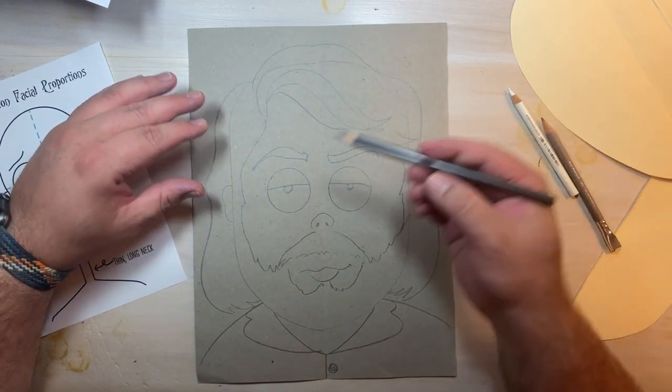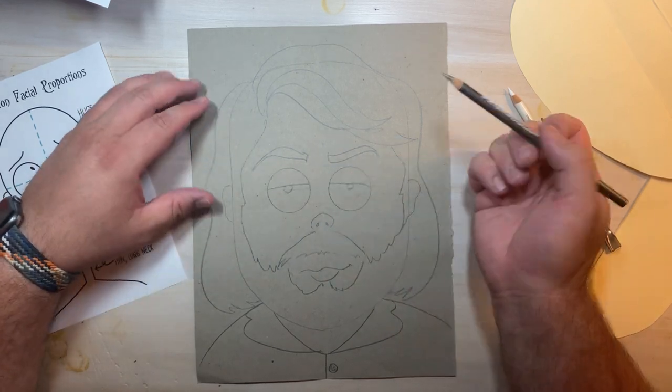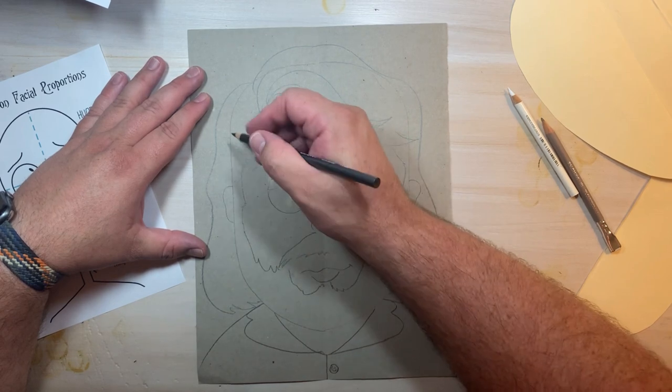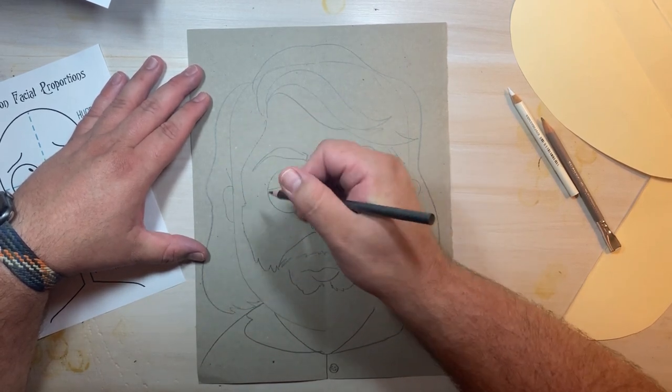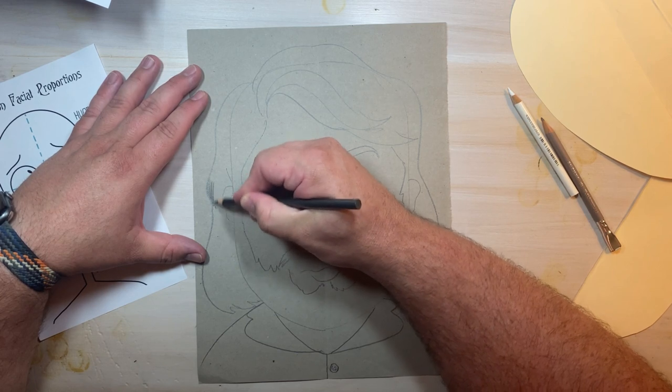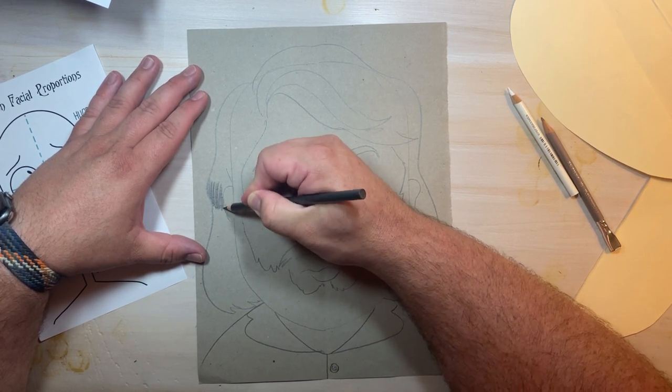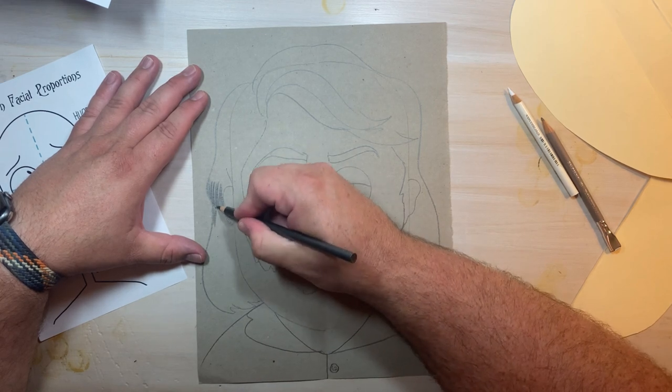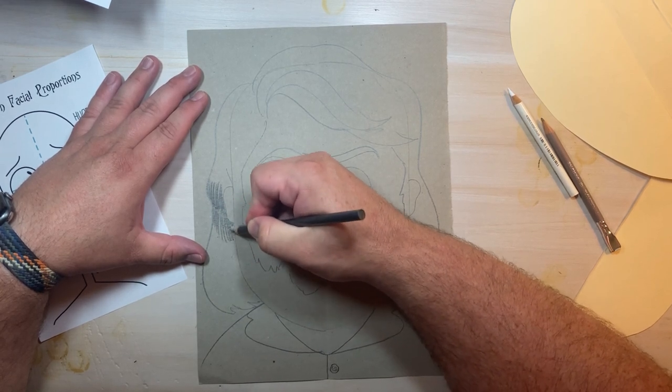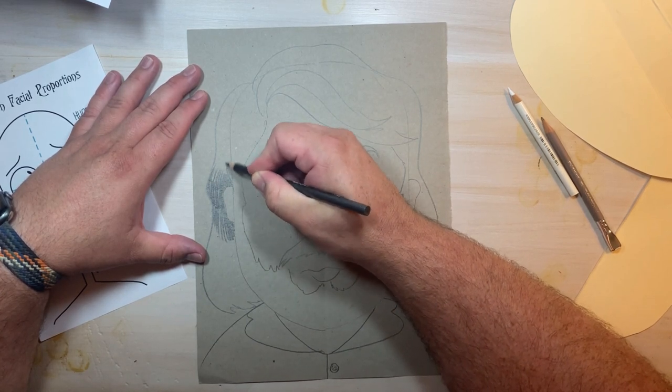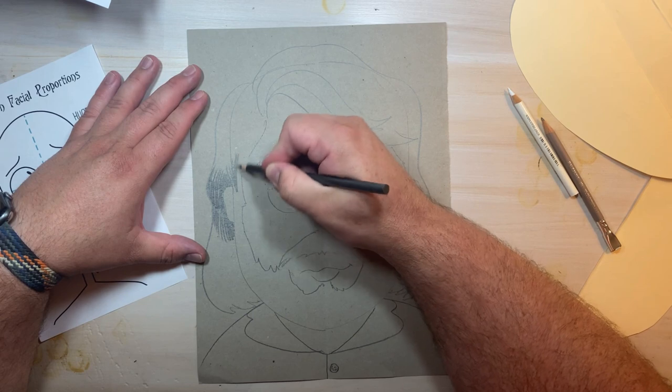An ebony pencil writes much darker than a regular pencil and we will need that to bring out the darker parts of our picture. Now normally we draw on white paper and we use a pencil or other writing tool to put marks that are darker than the paper. So that we can see the image that we're drawing.